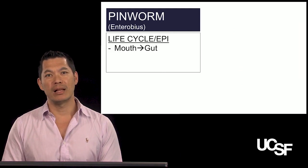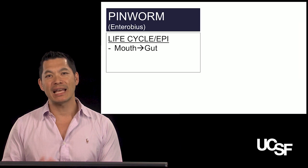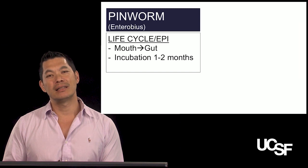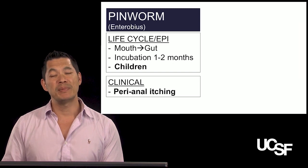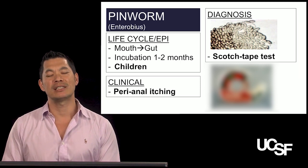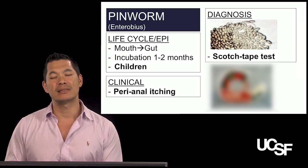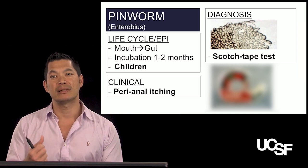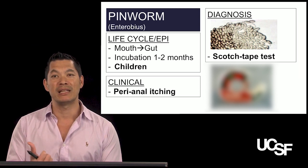How do you get pinworm? You ingest eggs through the mouth. They go to the gut, the eggs hatch into adults, the adults mate and lay eggs. There's an incubation of one to two months while this process occurs. It mainly occurs in children and is mainly manifested by perianal itching. You diagnose it by a scotch tape test — at night, the female comes out in the perianal area and releases thousands of eggs. If you place a piece of tape next to the child's skin in the morning, you can capture many of these parasites.